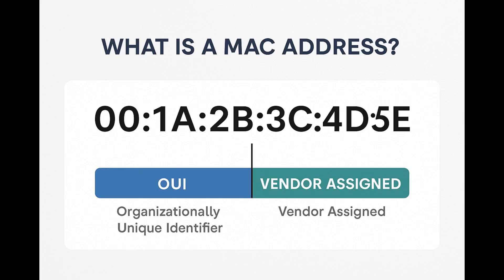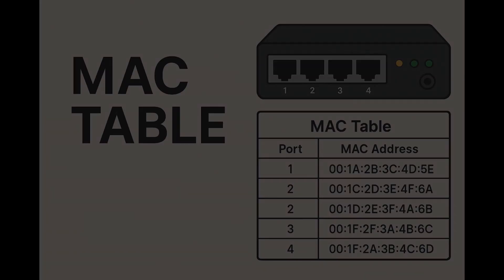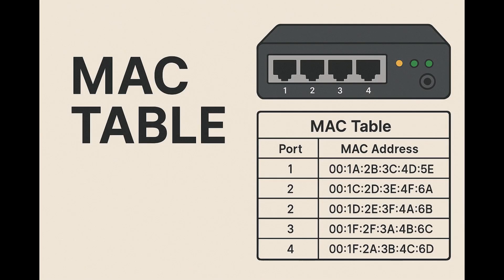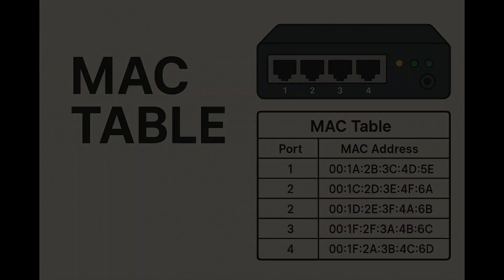The OUI will tell us which company made the device — for example Cisco, Intel, and so on. The other half is vendor-assigned, which will be unique per device made by that vendor. Switches store the MAC addresses they learn in a MAC table, or how it's sometimes called a CAM table. It contains a list of all learned MAC addresses and the corresponding physical ports they are connected to. The switch will automatically learn the MAC address from a device connected to it. If a switch is asked to send data to a destination MAC address that it doesn't know yet — in other words, if it doesn't know where the device is — it will send the data to all other ports connected to it. That's called flooding.